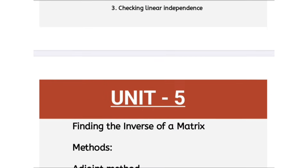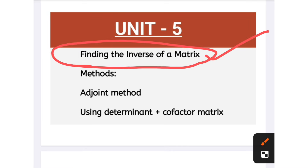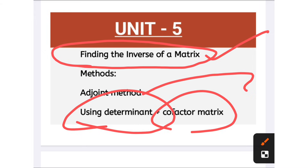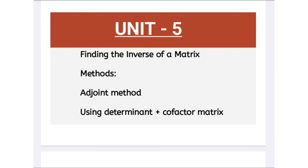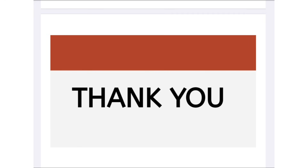For the last unit, unit number five, we are discussing only one topic related to the problematic — that is the inverse of a matrix. There are two methods: the adjoint method and using the determinant plus co-factor matrix. Try to prepare these problematic methods from unit number five. This covers business mathematics as per the new syllabus. If you have any doubts, let me know in the comment section. Try to gather information from your faculty as well, and give equal preference to both theory and problematic. All links are in the description box. All the very best for your examination — see you in the next video, bye bye.